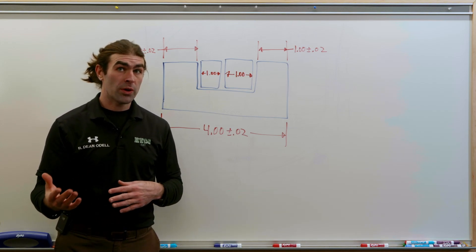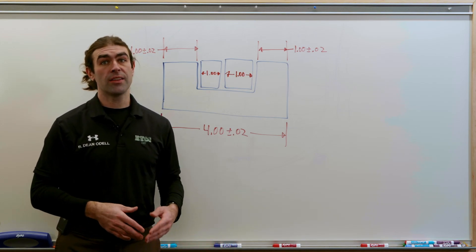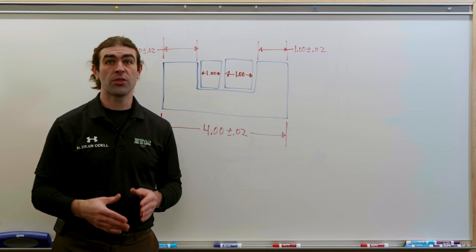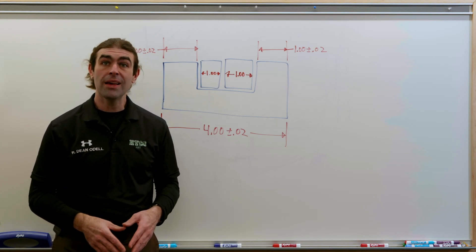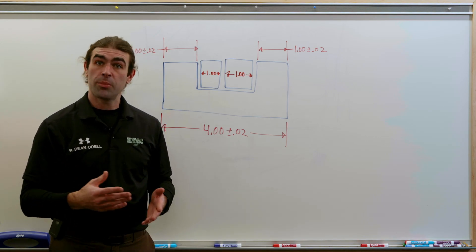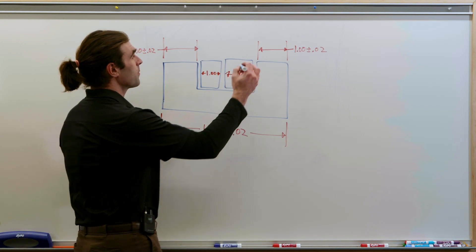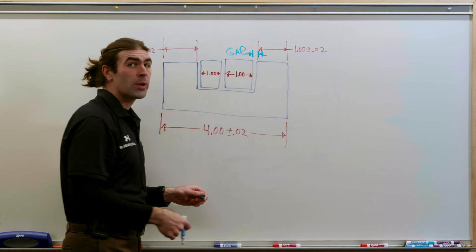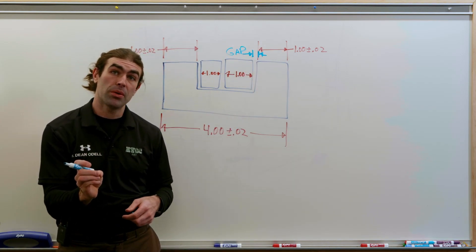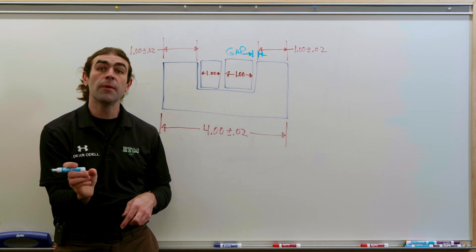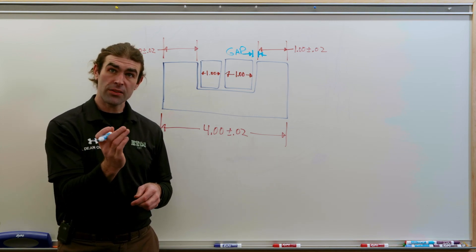So we want to know, will these two blocks fit in that assembly at worst case? So what would the worst case be? Let's do a tolerance stack up to figure it out. So the way a tolerance stack up works, we know we need a gap. We know there's got to be clearance.